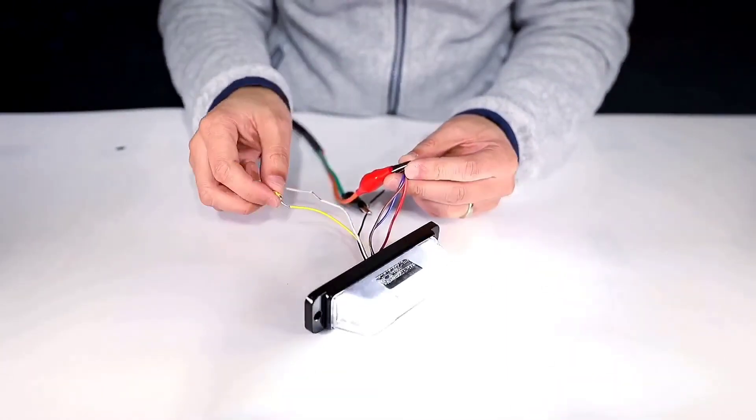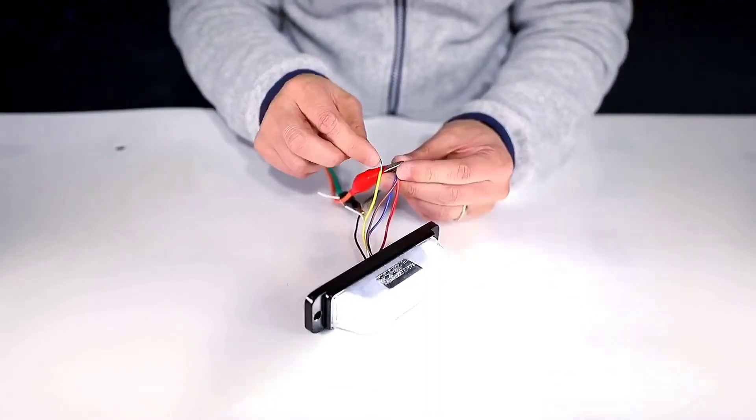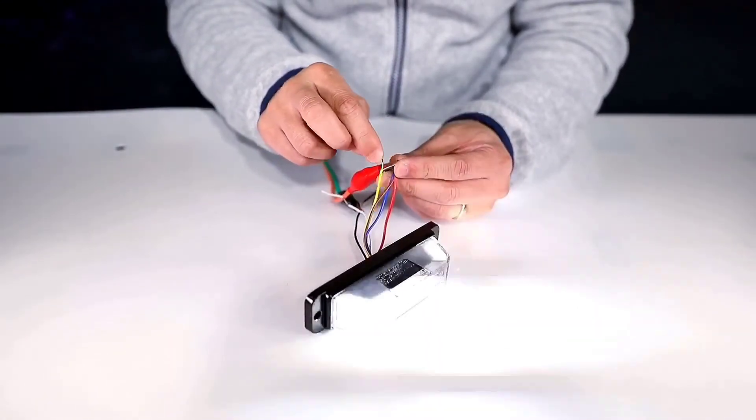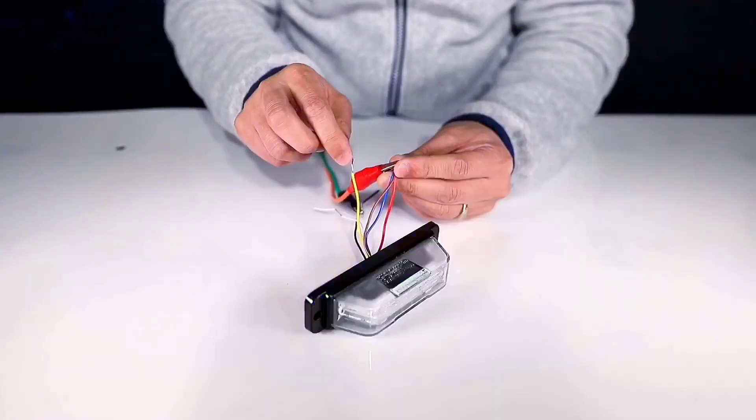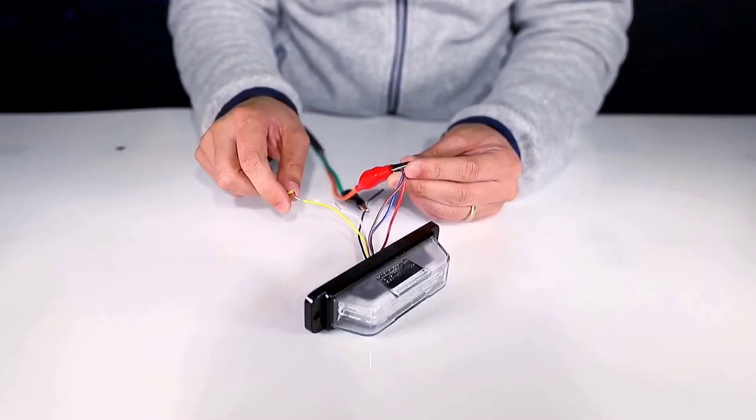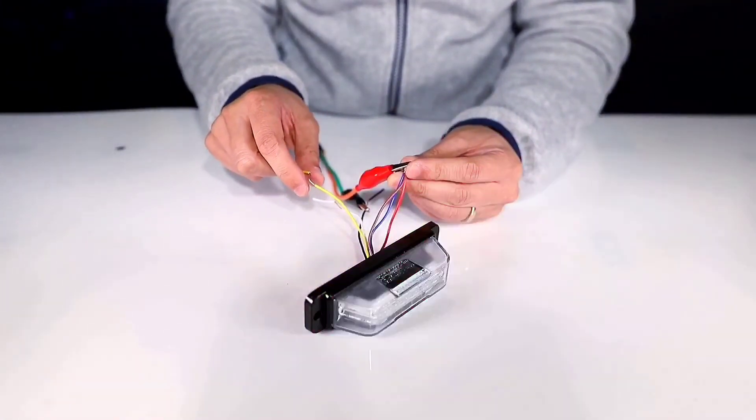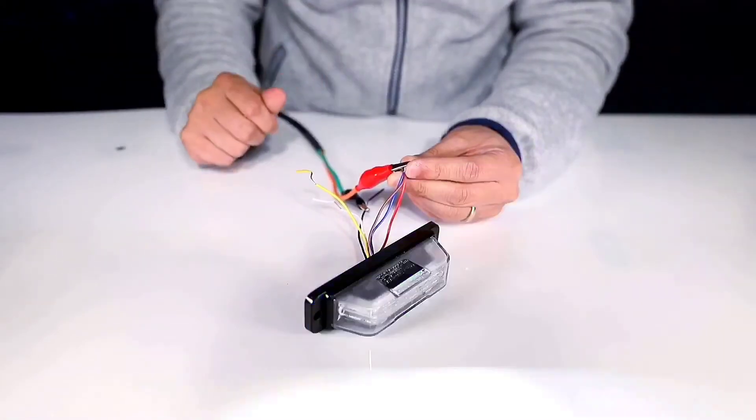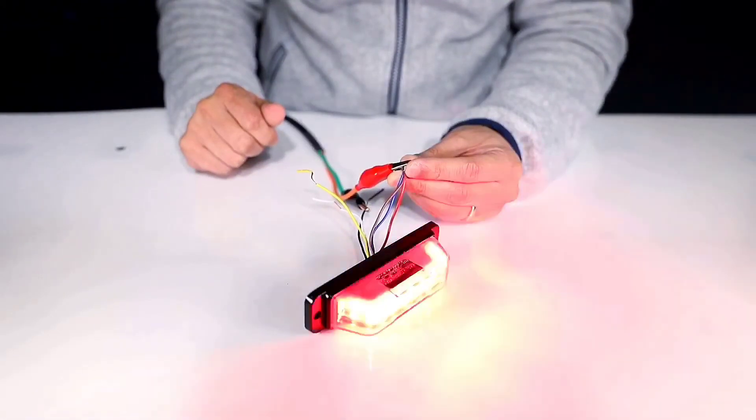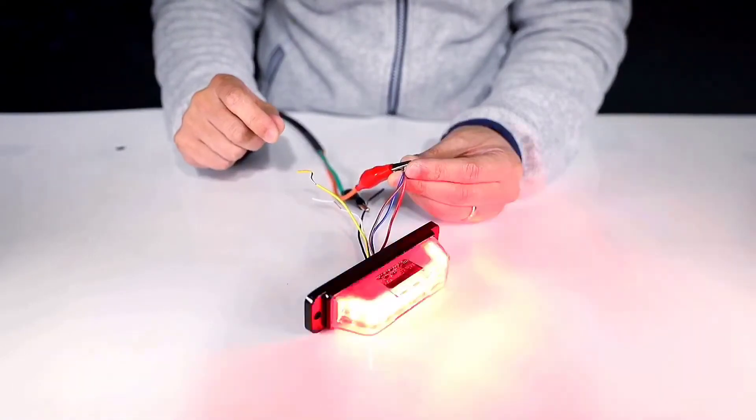And now let's choose our next flash pattern by quickly applying the yellow wire. Okay, now we can have three color wire rotating. Let's call it flash pattern two. And it also has been running for more than three seconds and it has been memorized.